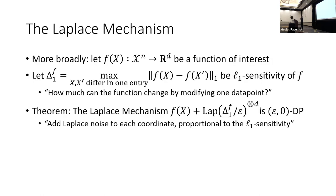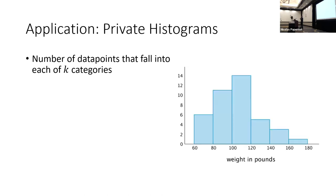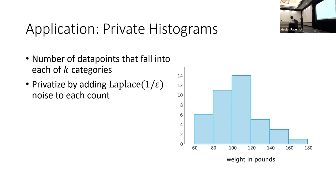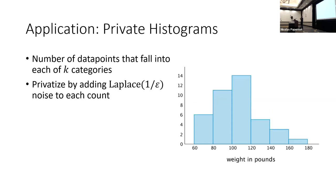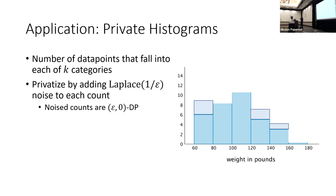A concrete example: private histograms. Suppose you have a dataset with weight in pounds and want to privately release a histogram. The Laplace mechanism perturbs each bin count by adding Laplace(1/ε) noise — some bins go up, some go down. The result is epsilon-0 DP. This allows releasing privatized counts for data analysis.